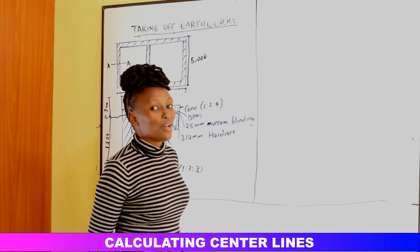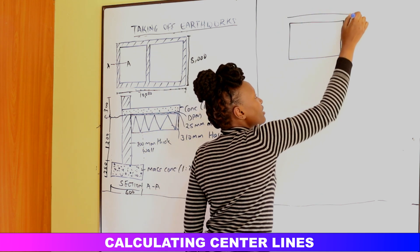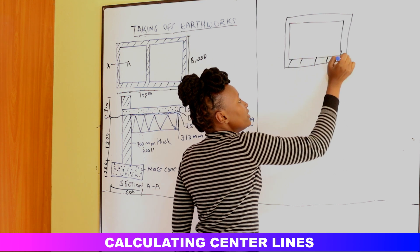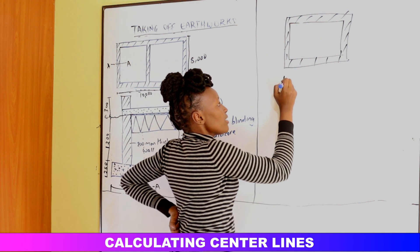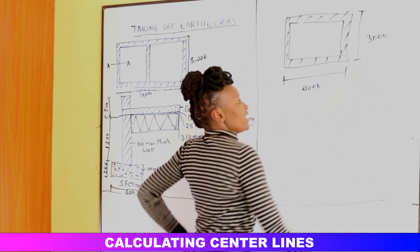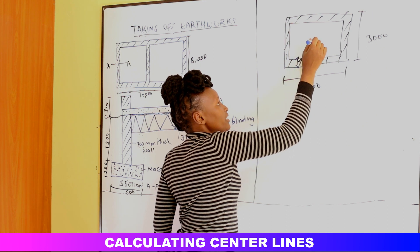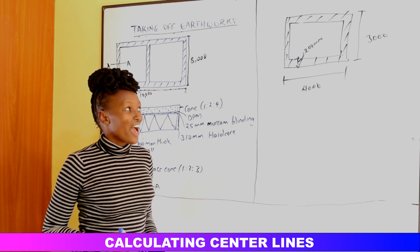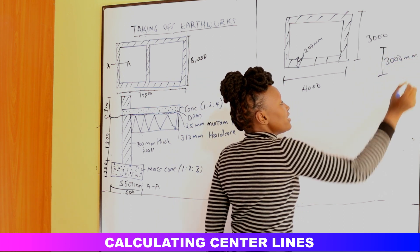For example, we have a rectangular building surrounded by a masonry wall. The dimensions of this building are 4000 millimeters by 3000 millimeters, and the wall thickness all around is 200 millimeters. We want to calculate the volume of the wall. We are told the building has a height of 3000 millimeters.